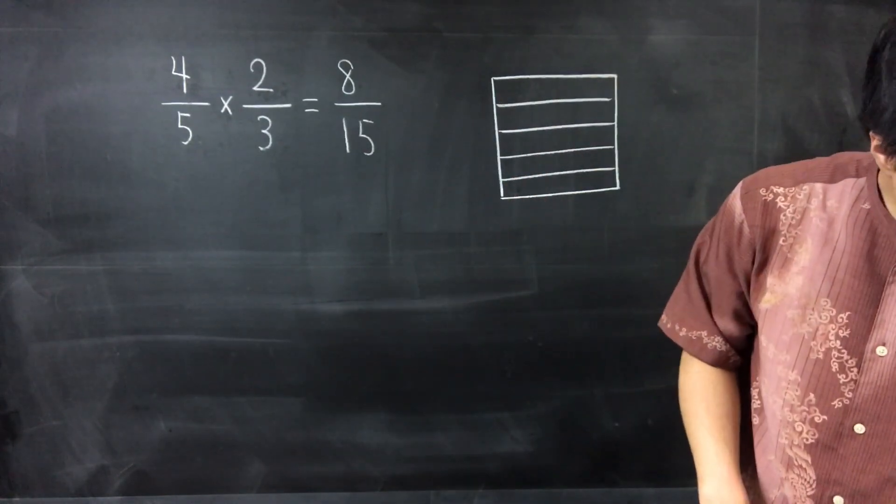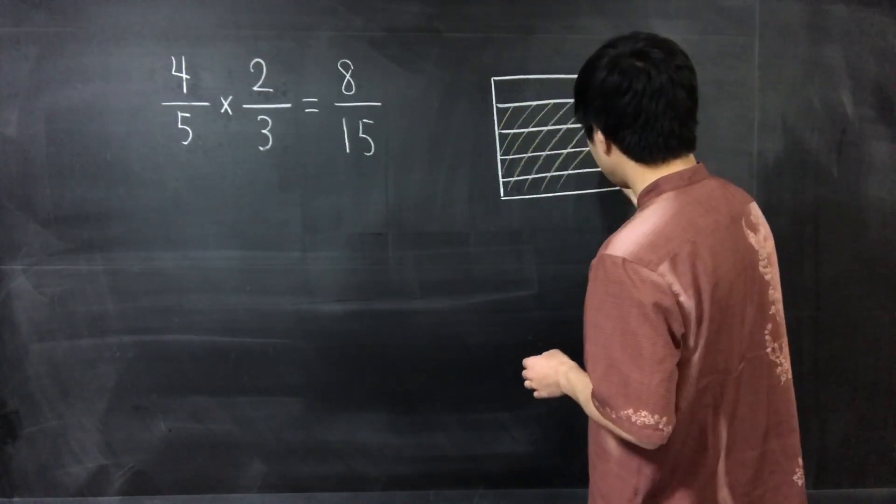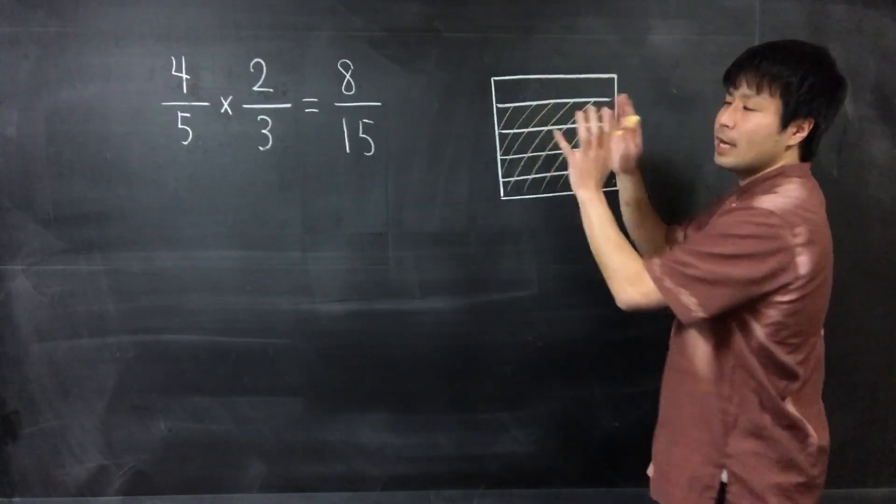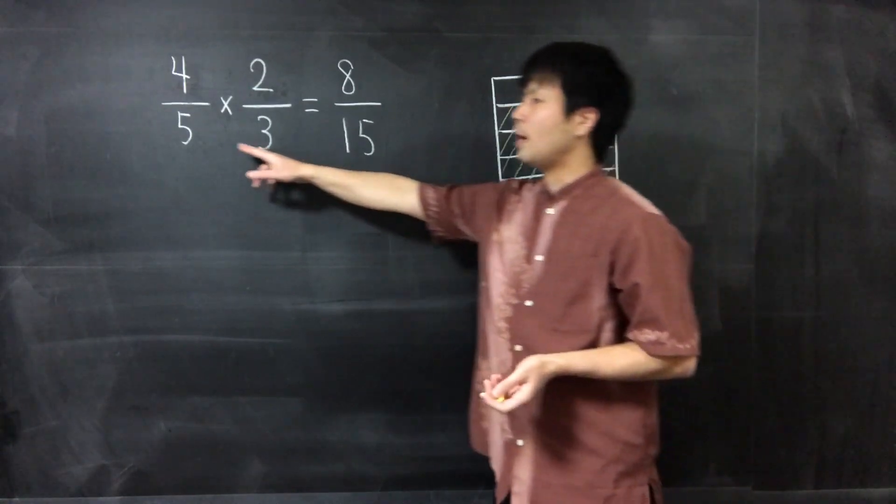Think of the area of the outer square as 1. 4 over 5 corresponds to this yellow area.